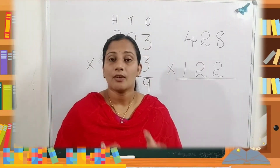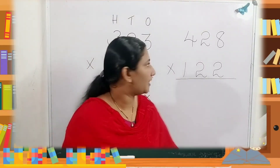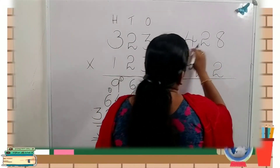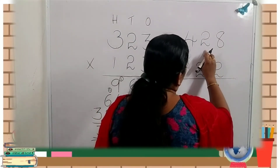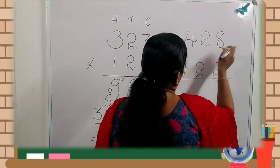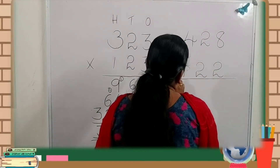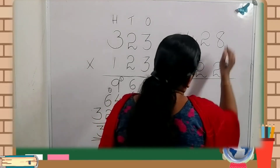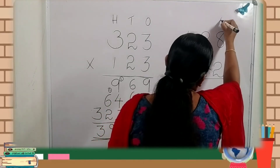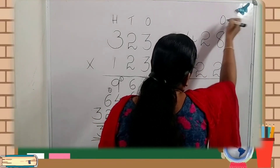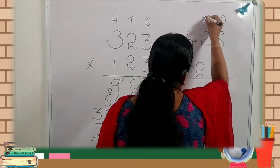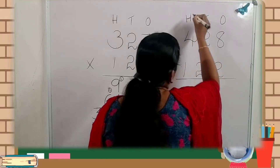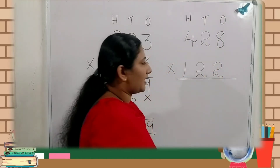One more example. The number is four hundred twenty-eight multiplied by one hundred twenty-two. Which are the places? Eight is in the ones place, two is in the tens place, four is in the hundreds place.